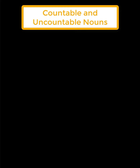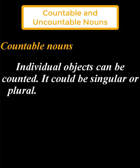في هذا الدرس علينا معرفة الأسماء المعدودة والأسماء غير المعدودة — countable and uncountable nouns. There are two types of nouns in the English language: countable and uncountable. تنقسم الأسماء في اللغة الإنجليزية إلى قسمين: اسم معدود واسم غير معدود. The countable noun: if an individual object can be counted — هي أسماء تدل على أشياء قابلة للعد.